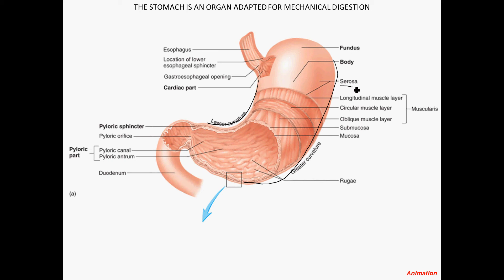There is an outer covering called the serosa — the serous membrane — and the serosa here is the visceral peritoneum. That is a serous membrane, and when the stomach is churning and moving, the secretion produced by that serous membrane helps the stomach glide past the other organs in the abdominal cavity and against the underside of the diaphragm.